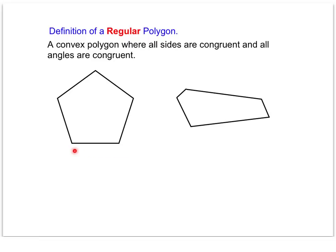This pentagon here would be considered a regular polygon. If we were told that each of the five angles were congruent and each of the sides were also congruent, then we could say yes, this is a regular polygon. This next figure is also a pentagon because it has five sides, but each of the five angles are not congruent and the sides are not congruent, so this would be a non-regular pentagon.